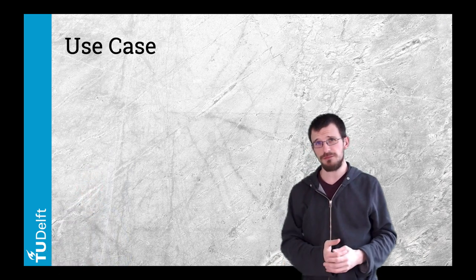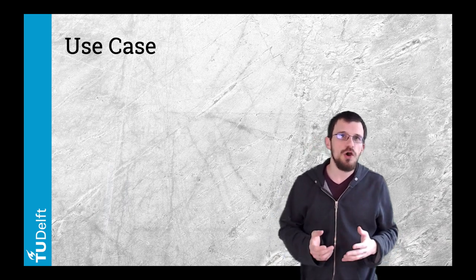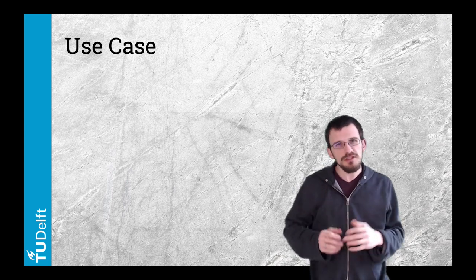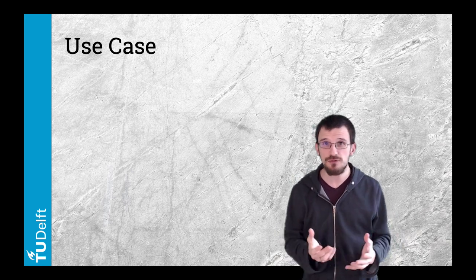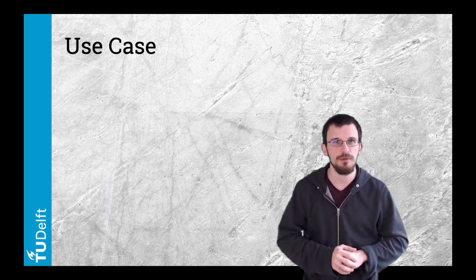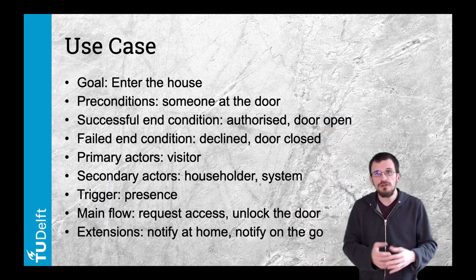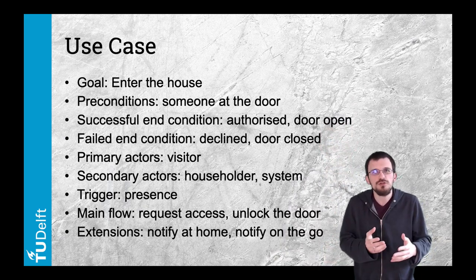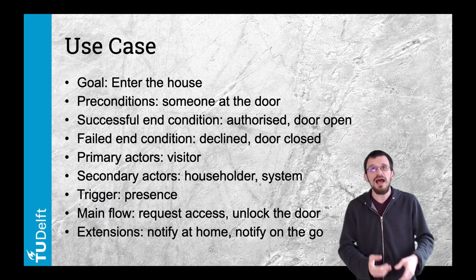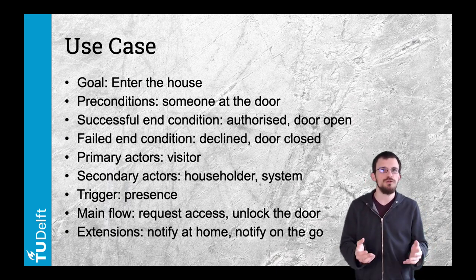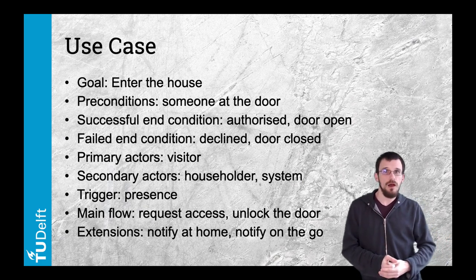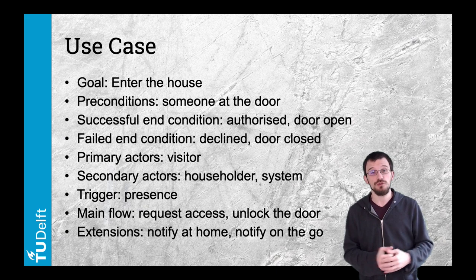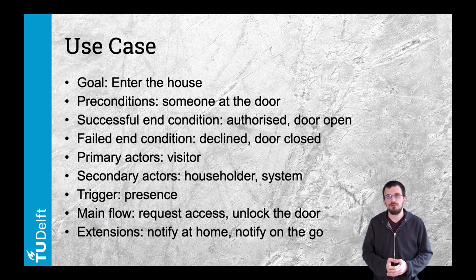In software design, use case diagrams are a way to capture the usage requirements of software. They should highlight the necessary actions that the product must enable, and describing them as a list in natural language is a helpful start. Similarly to database modeling, this is a way to surface requirements. Looking back at the doorbell example, a goal could be to enter the house — for this we need someone at the door willing to enter. This use case ends with the person being authorized with an open door, or declined access where the door would remain closed.